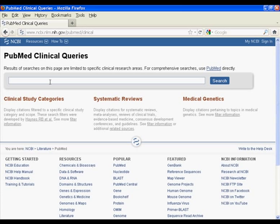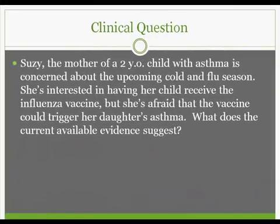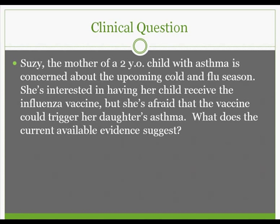For this tutorial, we'll be using this specific clinical question. Suzy, the mother of a 2-year-old child with asthma, is concerned about the upcoming cold and flu season. She's interested in having her child receive the influenza vaccine, but she's afraid that the vaccine could trigger her daughter's asthma. What does the current available evidence suggest?